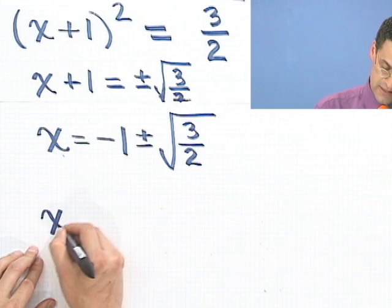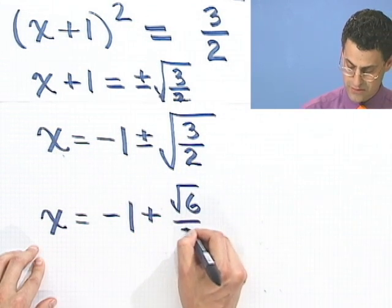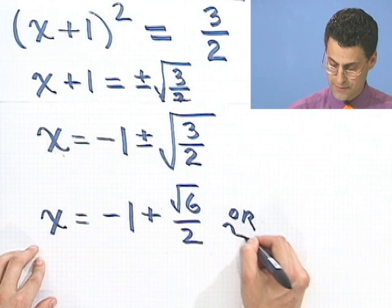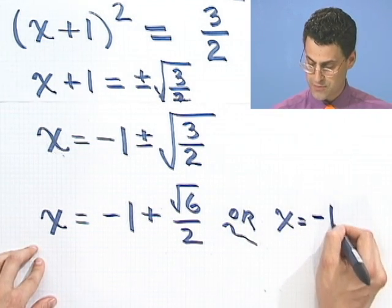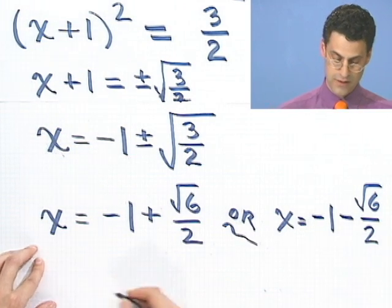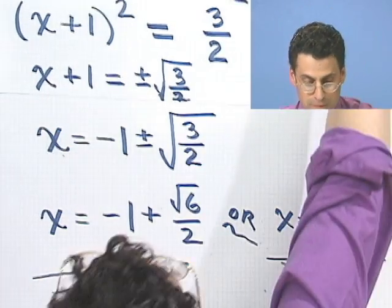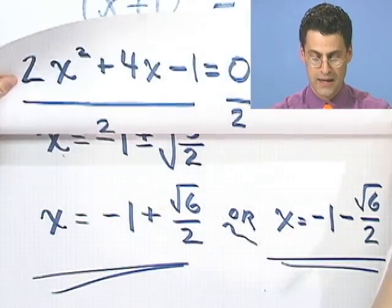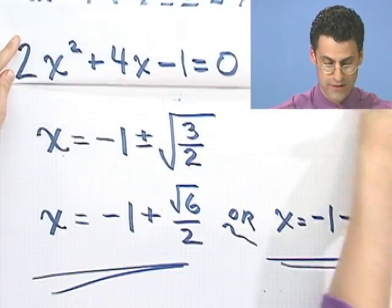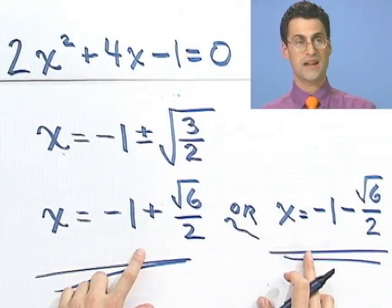So you could say the answer is x equals minus 1 plus the square root of 6 over 2. Or the other answer is x equals minus 1 minus the square root of 2. So those are the two answers to the original quadratic equation. That one, by the way, remind you, is way over here. And it turns out these two answers satisfy that.